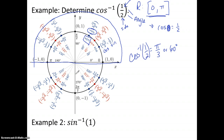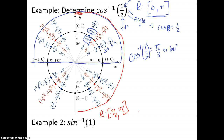Let's do the same thing for inverse sine. The range of inverse sine is negative pi over 2 to pi over 2. So we look between negative pi over 2 and pi over 2 on the unit circle — that means the first and fourth quadrants. We're looking for where the y-value equals 1. The y-value is equal to 1 right here, so the angle is pi over 2. The answer to this question is pi over 2. We're looking for the angle measurement given the side.